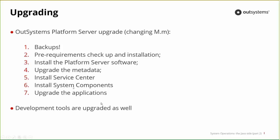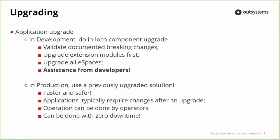After that, go ahead and upgrade all your applications. Since we're changing the major and minor, development tools are also required to be upgraded — the first two digits must always be the same between the platform server and the development tools. For the application upgrade, always start with development and do a local component upgrade. Validate the breaking changes document, upgrade extension models first, then upgrade all the eSpaces. If you have breaking changes you don't understand, ask assistance from your developers.